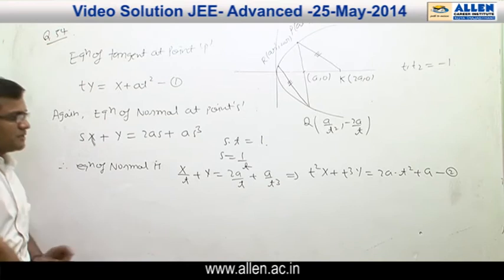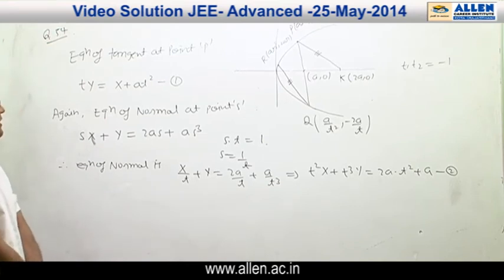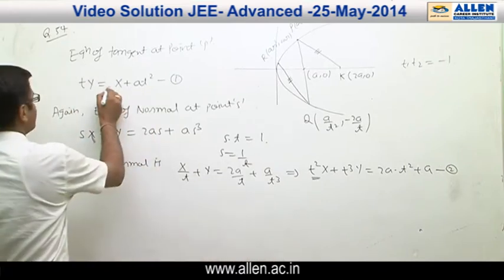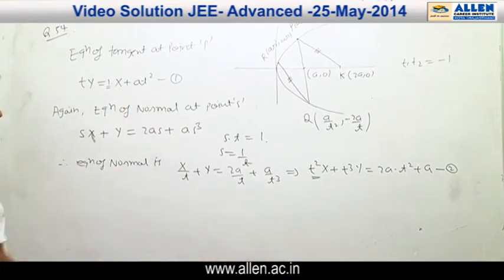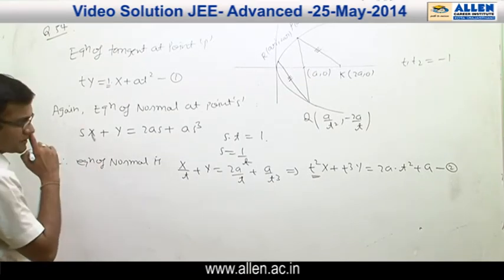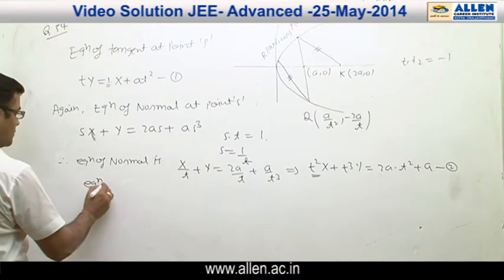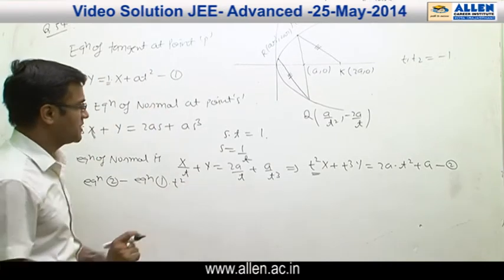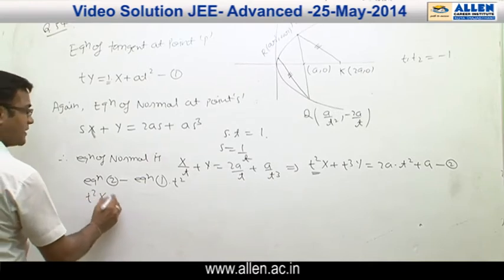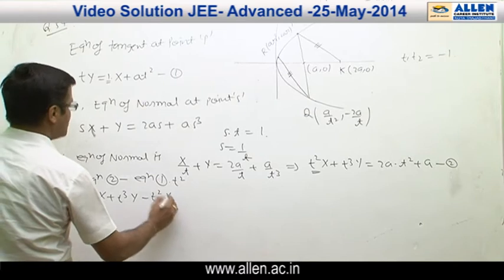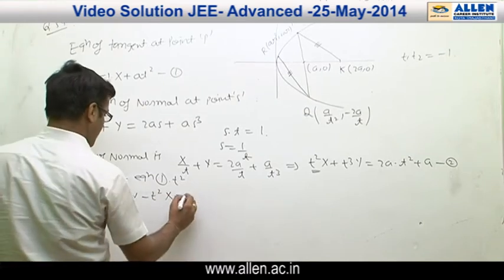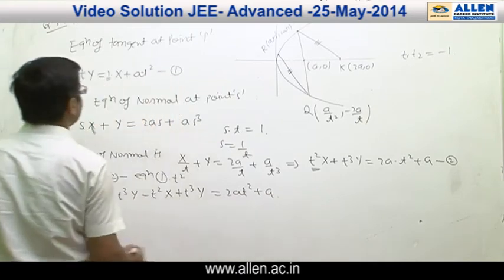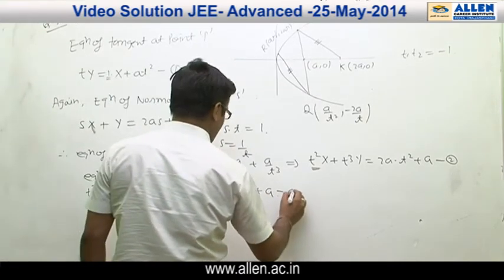Now we have two linear equations in x and y and we have to find the y-coordinate, which means we have to cancel the x term. The coefficient of x in equation 2 is T² and in equation 1 it is 1. Therefore, to cancel the x term, we compute equation 2 minus T² times equation 1.